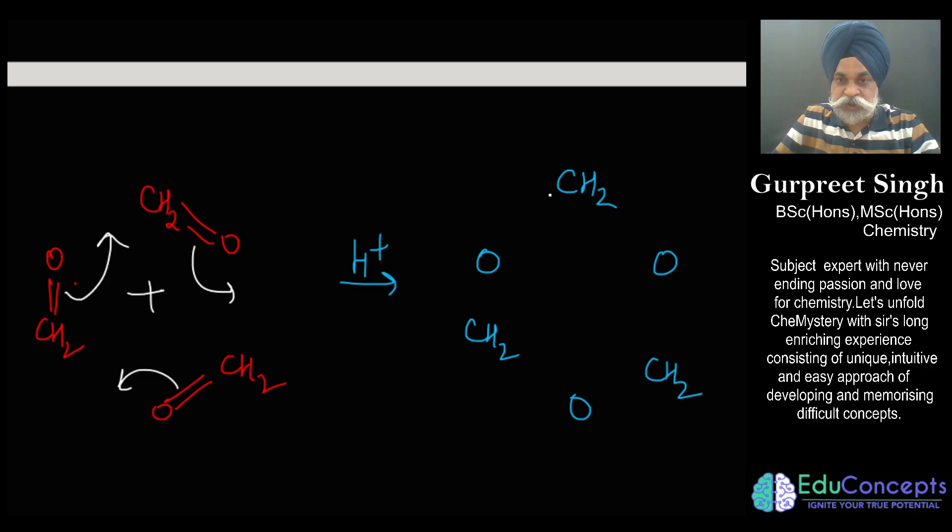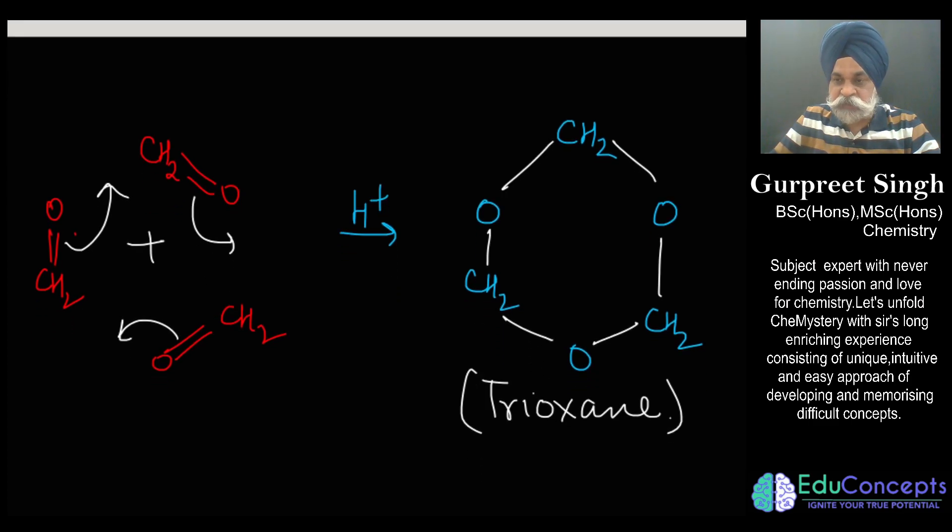So you shall be getting a compound which we call it as trioxane. This is a very important compound where it underwent trimerization. This particular compound is used as a binder in industrial purposes.